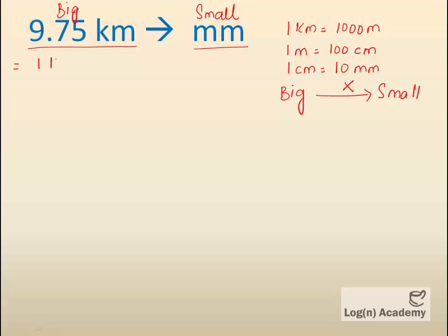We will see how much 1 km equals in mm. 1000 x 100 x 10. This value equals 10,000,000. So 1 km equals this value in mm.